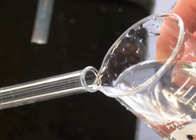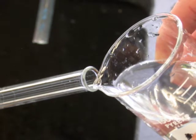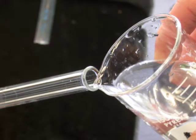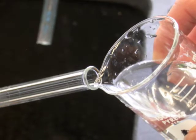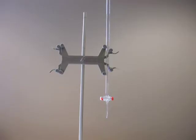Rinse the burette thoroughly, first with tap water and then with deionized water. Use a beaker to pour into the top of the burette rather than trying to hold the opening of the burette under the faucet.